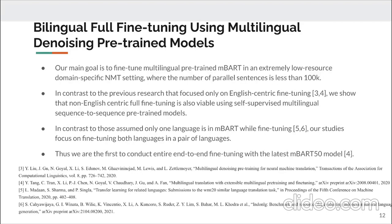Our main goal is to fine-tune the multilingual pre-trained MBART model in an extremely low-resource domain-specific NMT setting where the number of parallel sentences is less than 100,000. We are the first to conduct end-to-end fine-tuning including both languages in a non-English-centric manner with the latest MBART-50 model. We train six bilingual models through pairwise combinations among Sinhala, Tamil, and English languages.